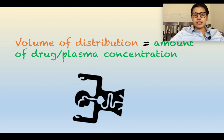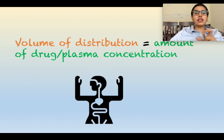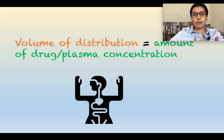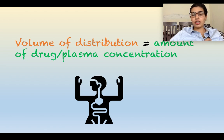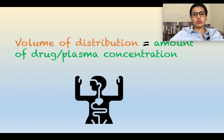Volume of distribution is actually the apparent volume of distribution. The term 'apparent' means it is a misnomer — it is not the actual volume, but the hypothetical volume in which the drug is getting distributed. Since we call it a volume of distribution, the units are in liters or milliliters.